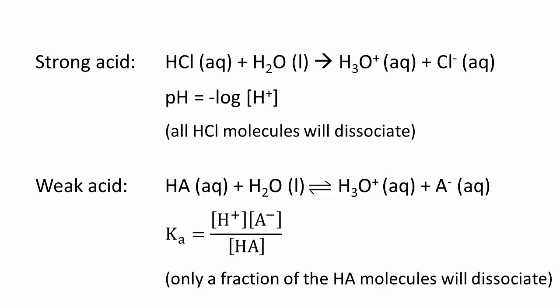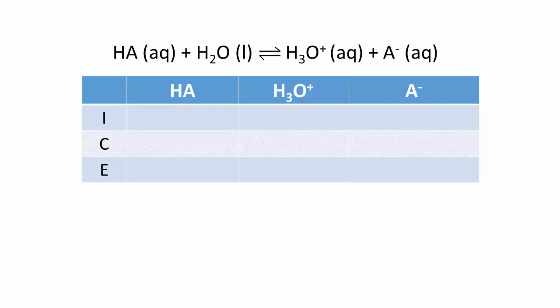As with any equilibrium, an ICE table is very useful. For the line of initial values, the concentration of the weak acid, HA, is typically given in the question. The concentration of the conjugate base, A⁻, is zero. In pure water, the initial concentration of the hydronium is technically 1.0 times 10 to the negative 7, but we will ignore this very small value and say that it is zero as well.